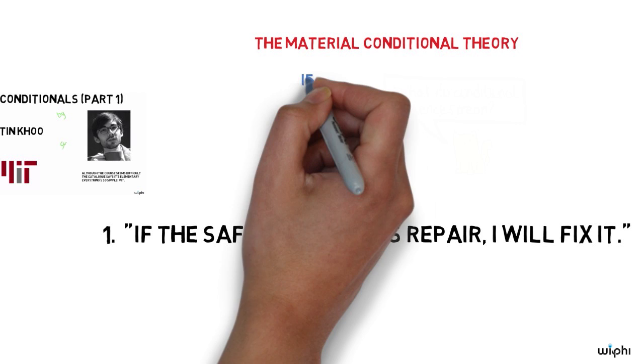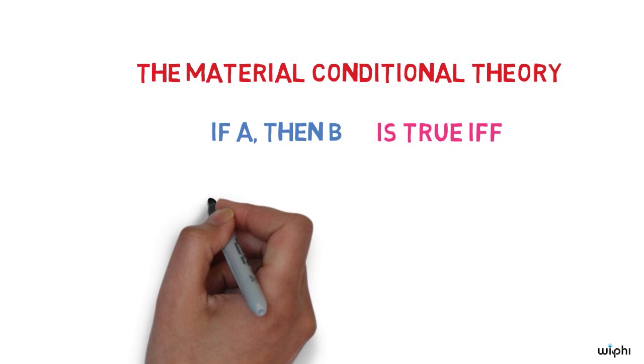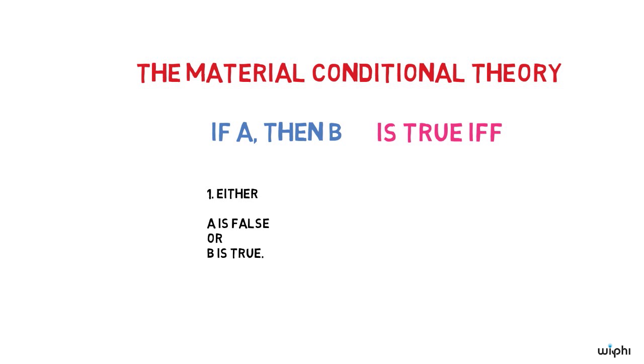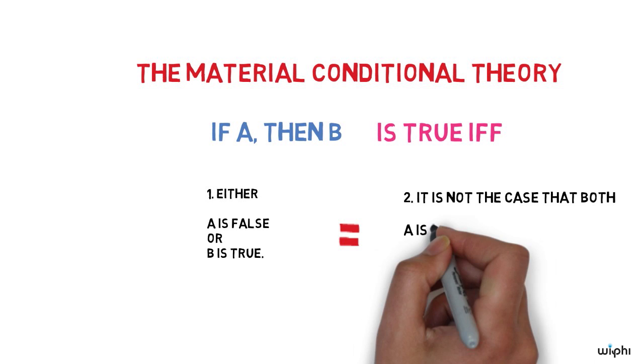According to that theory, a conditional if A then B is true just if either A is false or B is true. Equivalently, it is true just if it's not the case that both A is true and B is false.